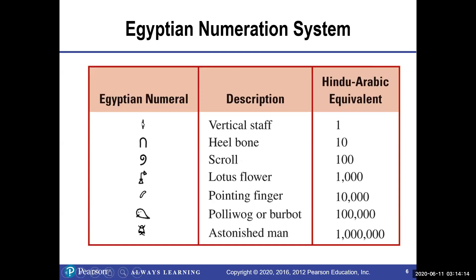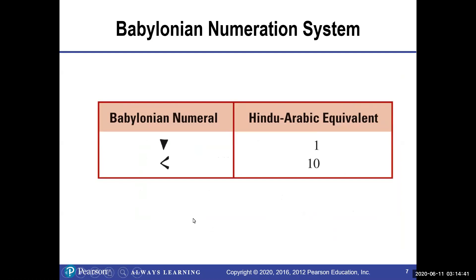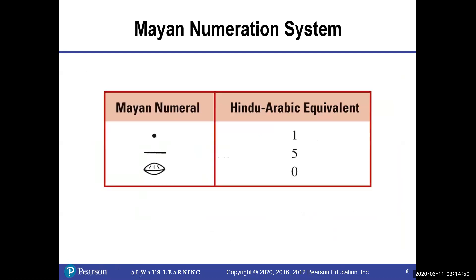These are the Egyptian numeral symbols and their descriptions: a vertical staff is equivalent to one, a heel bone is equivalent to ten, and so on and so forth. These symbols are used in the Egyptian numeration system to represent numbers. Then we have the Babylonian system — one symbol represents one, and another represents ten. And then the Mayan system, with its representations and Hindu-Arabic equivalents — they look a bit unusual.